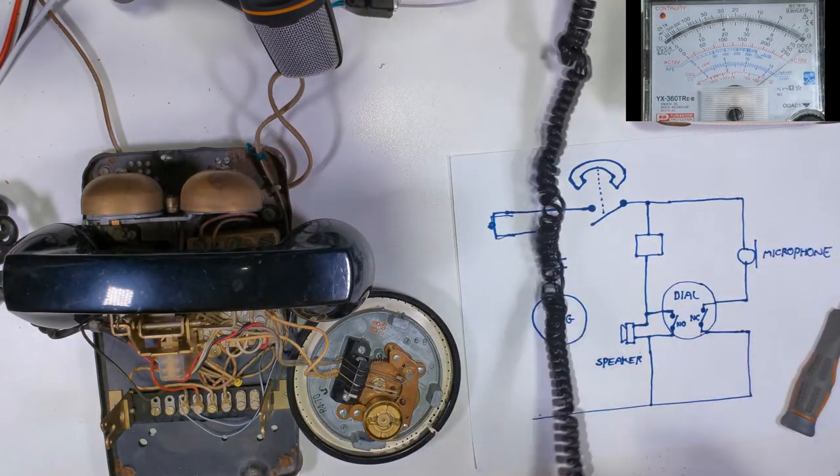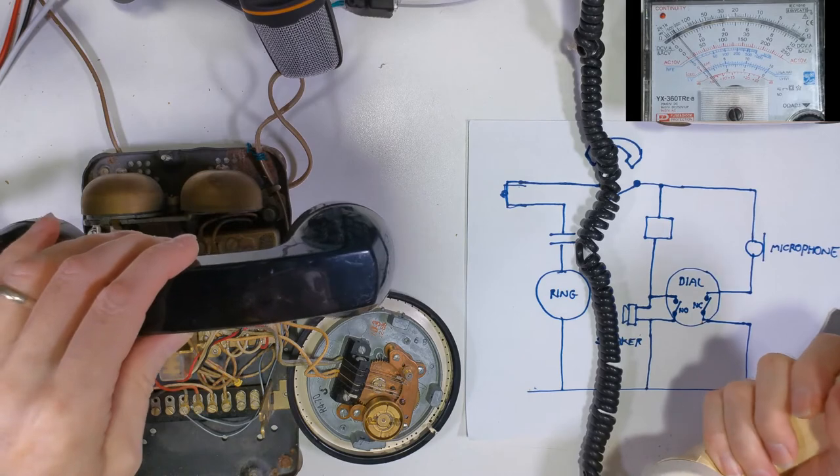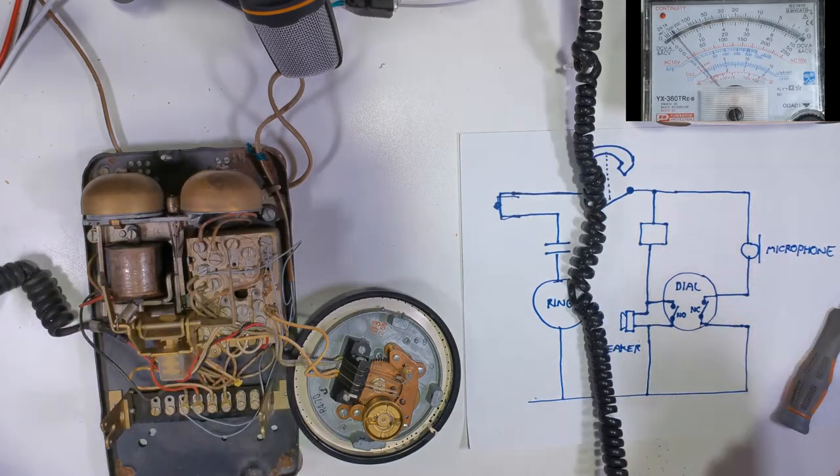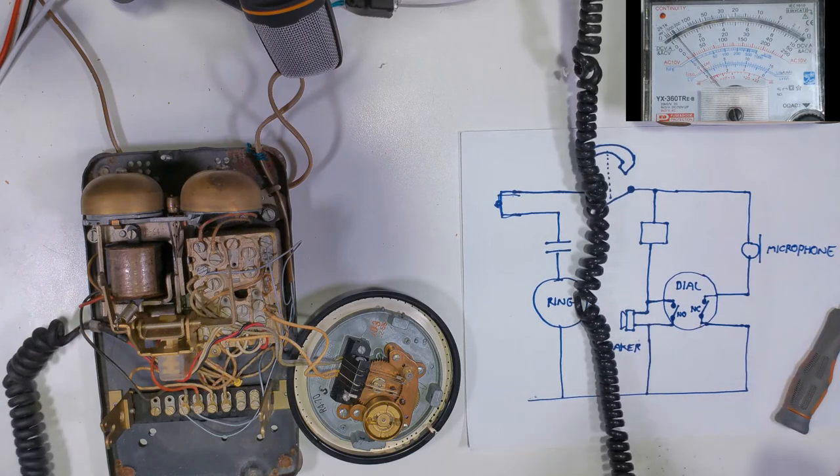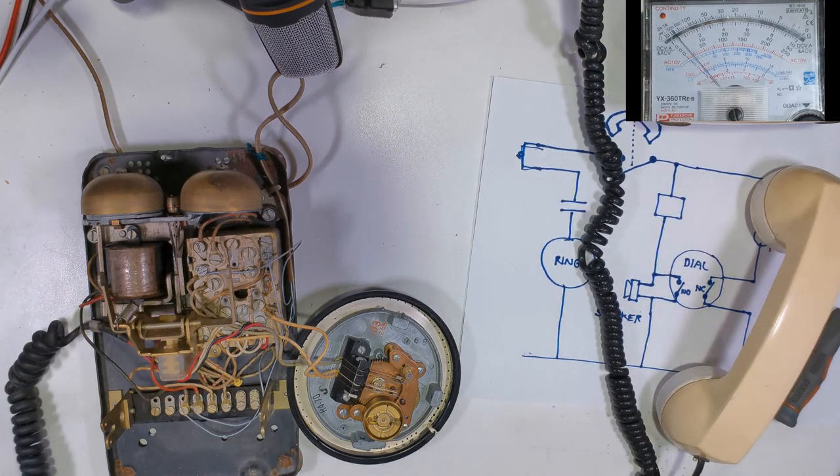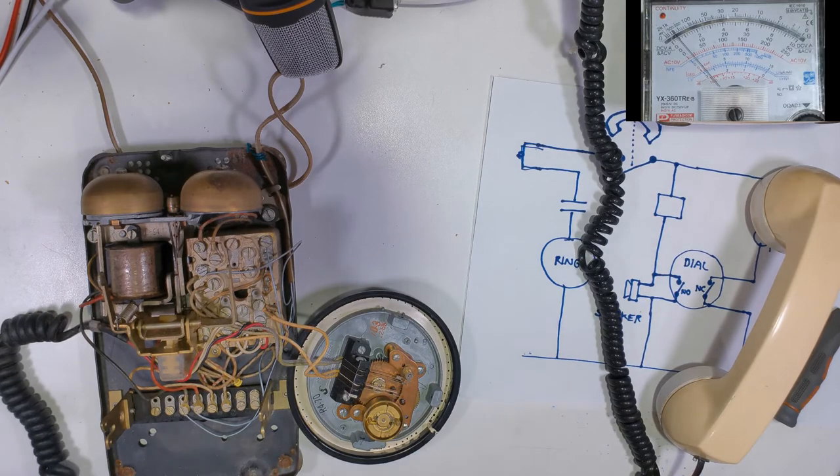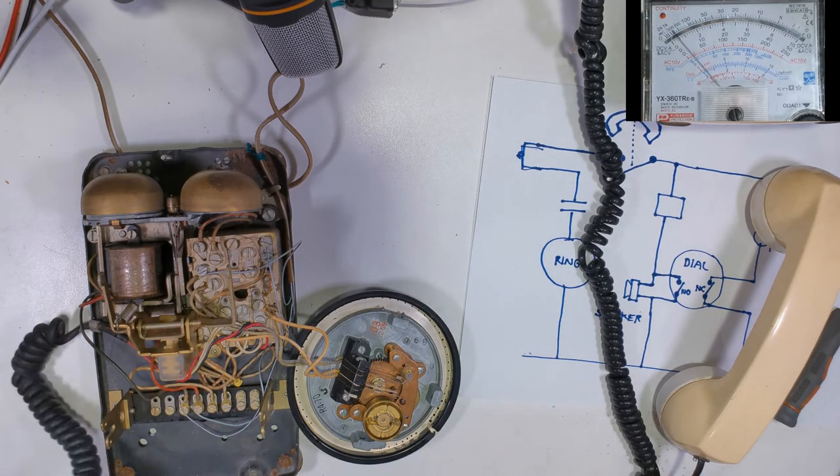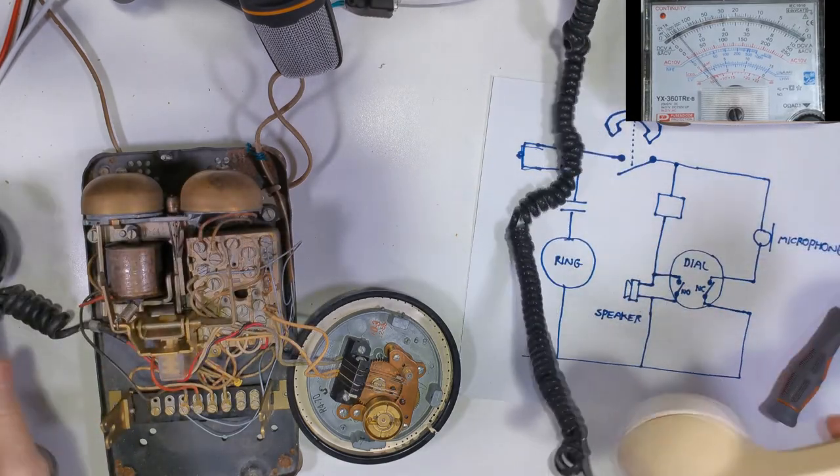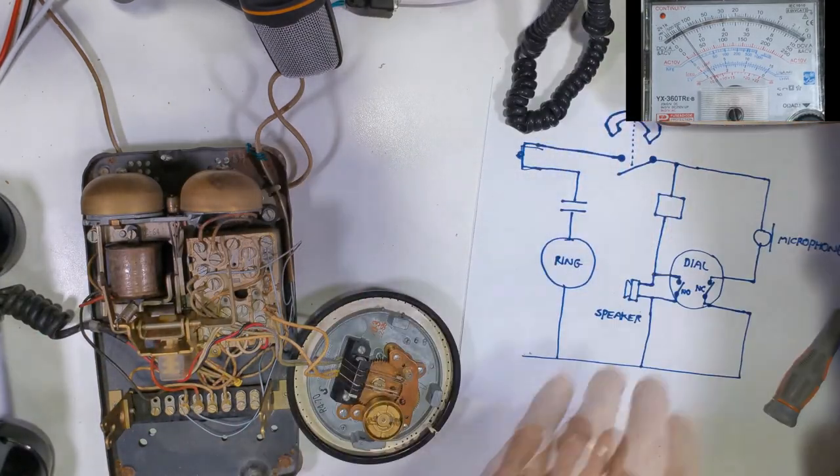What happens when you pick the phone up, you can see the voltage drops way down because we've made our circuit. The telephone exchange notices that and then stops the ring voltage going because it knows the connection is made. So basically when the connection is made then what's happening is that the microphone...